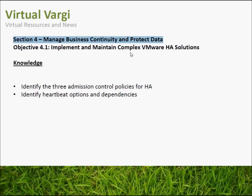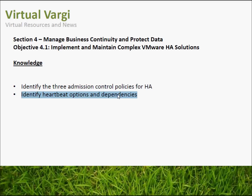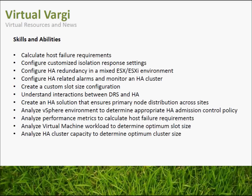Objective 4.1: Implement and Maintain Complex VMware HA Solutions. This HA subject could be a lengthy one, but we're only going to go through what's required for this exam blueprint. For example, identify the three admission control policies for HA and identify heartbeat options and dependencies. We're just going to go over what's required for this exam as it is quite a lengthy subject.